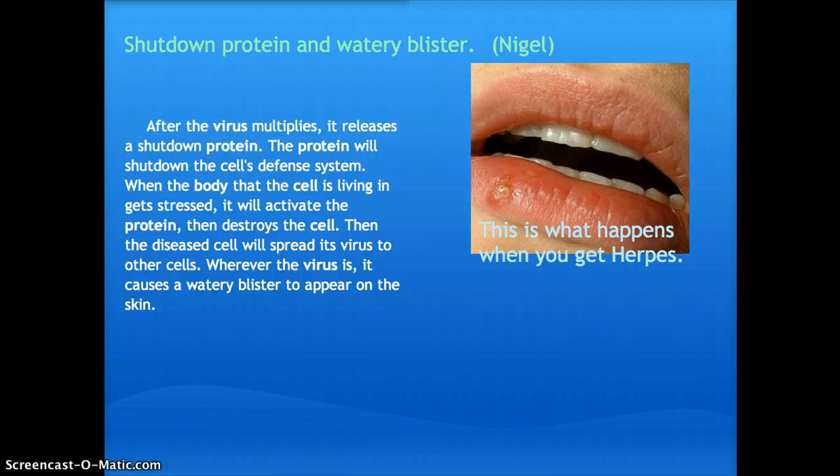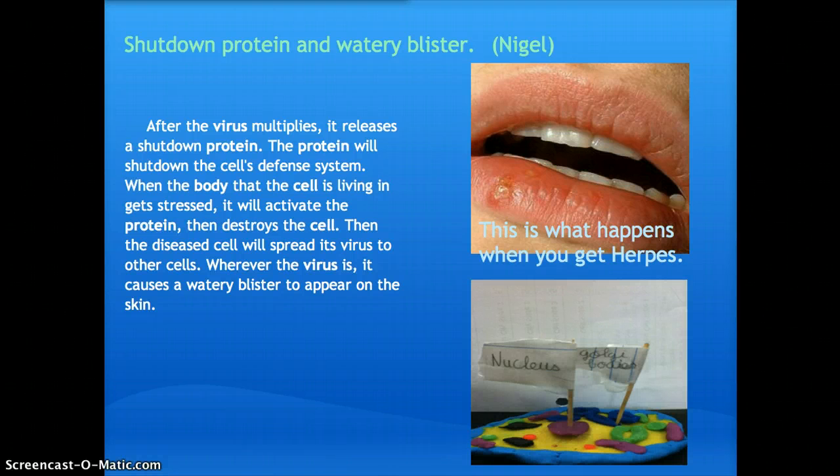This normally happens around the lips and the genitals. Shutdown protein and watery blister. After the virus multiplies, it releases the shutdown protein. The protein will shut down the cell's defense system. When the body that the cell is living in gets stressed, it will activate the protein, then destroys the cell. Then the diseased cell will spread its virus to other cells. Wherever the virus is, it causes a watery blister to appear on the skin. It's just pretty ugly, as you can see, right there.